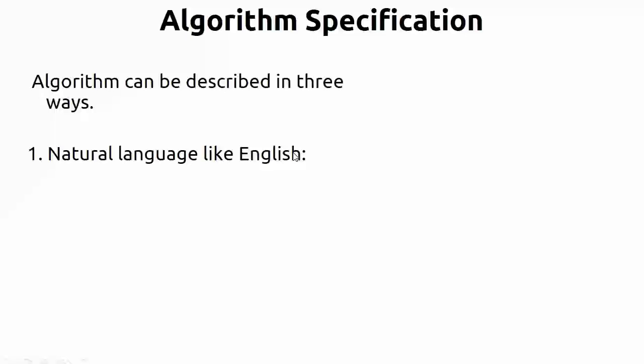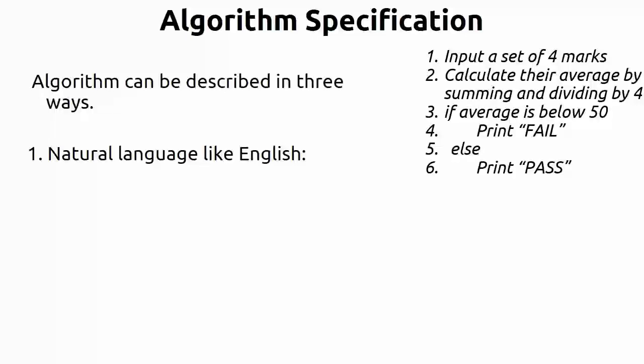The first way is natural language, like English. You specify each instruction in simple sentences. For example, if you want to store four subject marks, sum them up, and find the average: if the average is less than 50 print 'fail', otherwise print 'pass'. You write: input a set of four subject marks, calculate their average by summing and dividing by four, then if the average is below 50 print 'fail', else print 'pass'.